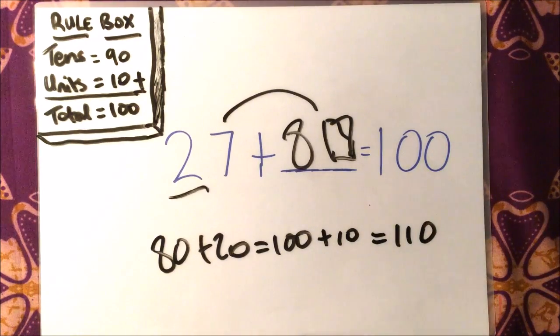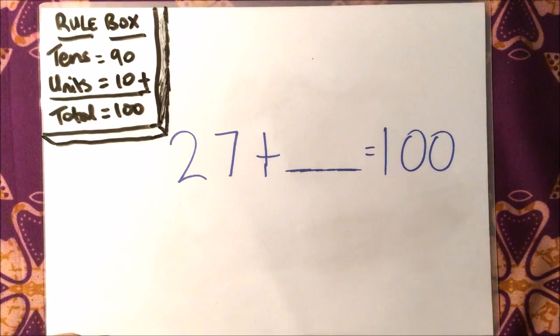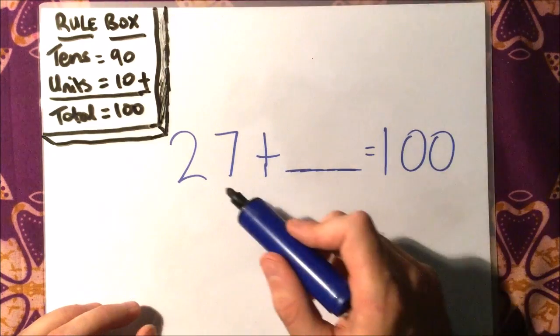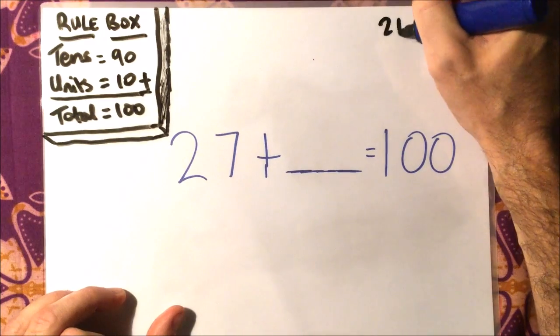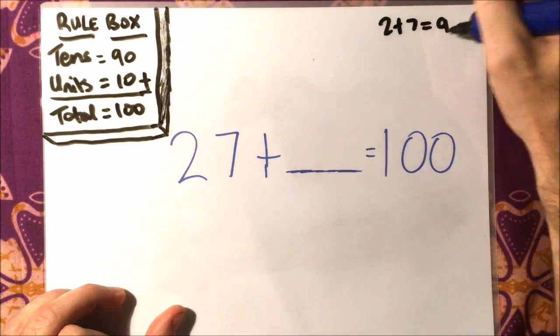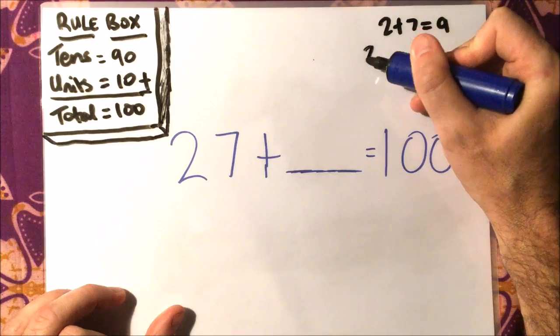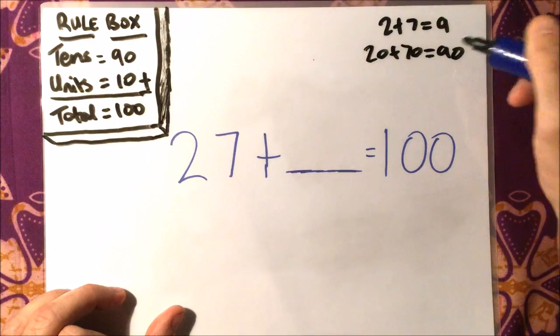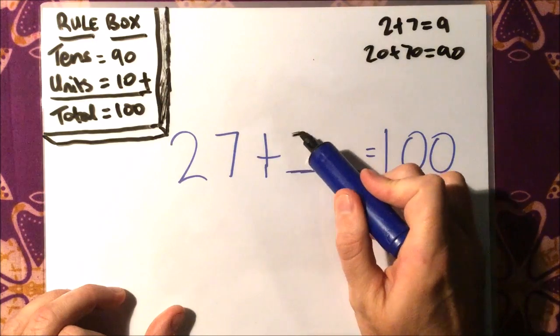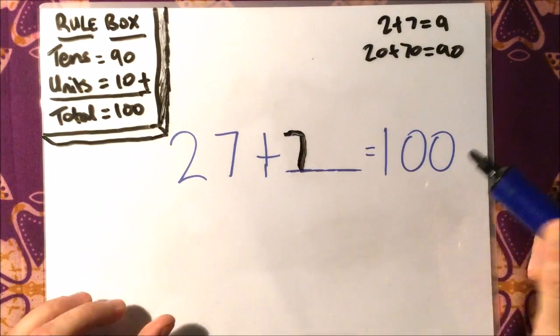What we want is to make the tens add up to 90. So I think of 2. What do I add to 2 to make 9? I do 2 add 7, that makes 9. So I also know that 20 add 70 makes 90, so I'm going to put 7 tens here.